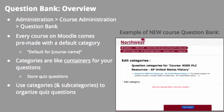Each Moodle course contains a question bank, accessible using the Course Administration menu. When a new course is created, it comes with a pre-made default category for that course. Categories are like containers for your quiz questions, a place to store and organize questions. Questions are easily retrievable, both for editing and for quiz creation, when question bank categories and subcategories are well organized.